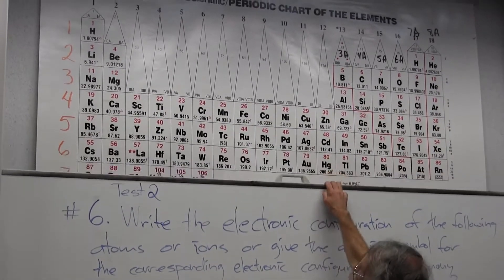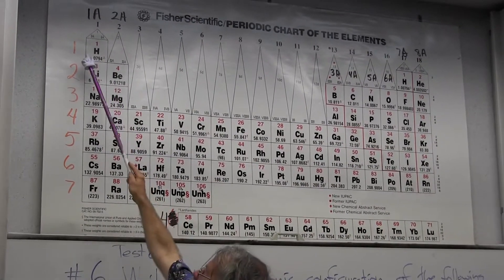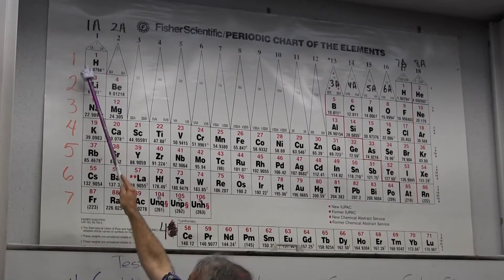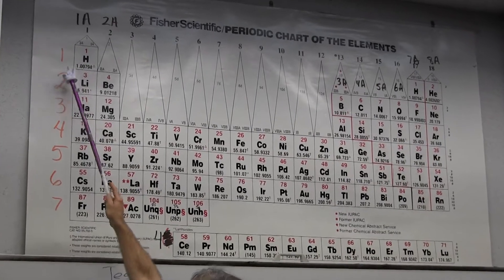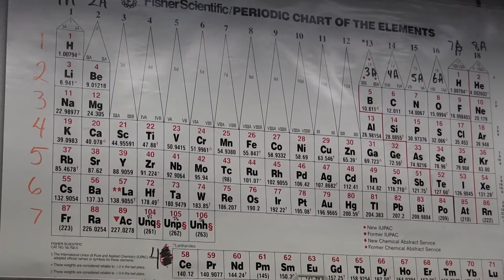First is the K-shell. The principal quantum number one corresponds to the K-shell, which stands for kurz, the German word for short.